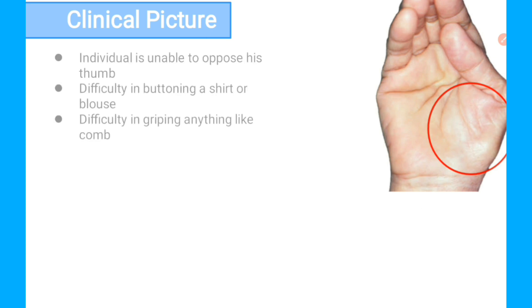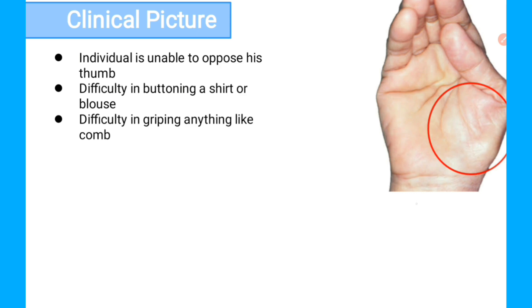Now we have the clinical picture of Carpal Tunnel Syndrome. When a person is a victim of Carpal Tunnel Syndrome, they will present with certain clinical symptoms. The first symptom is that the individual is unable to oppose the thumb because of Thenar Muscle Weakness, and there is difficulty in buttoning a shirt or blouse because of the weakness of the first and second Lumbricals. There will also be some gripping difficulties.